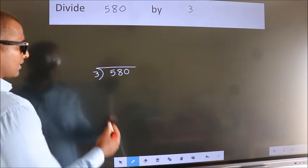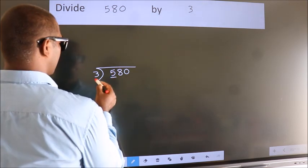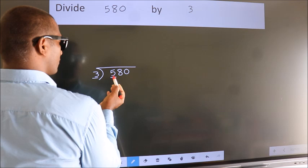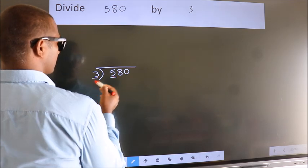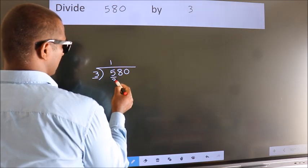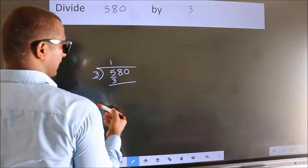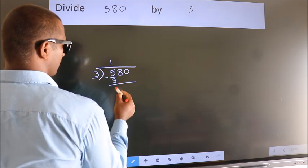Next, here we have 5, here 3. A number close to 5 in 3 table is 3 1s 3. Now, we should subtract. We get 2.